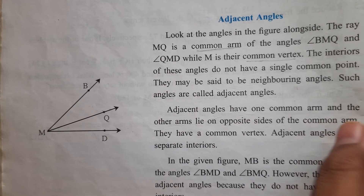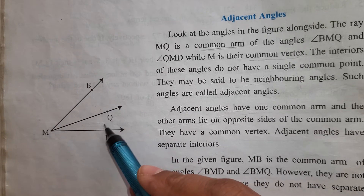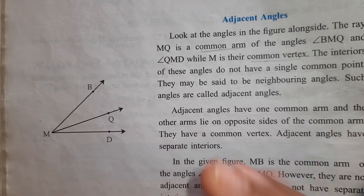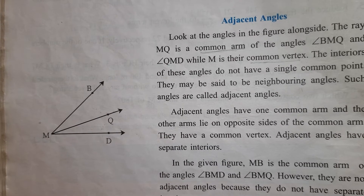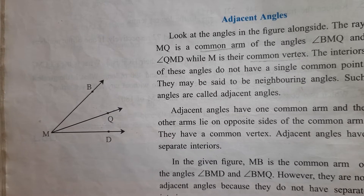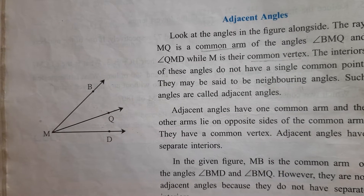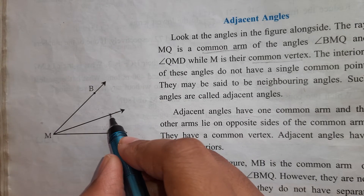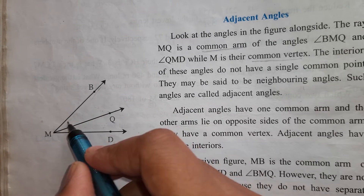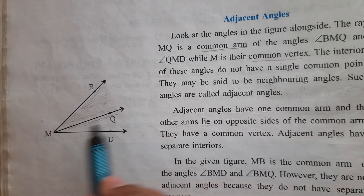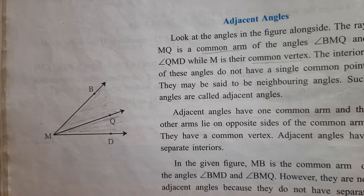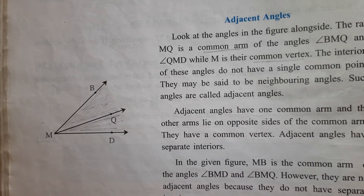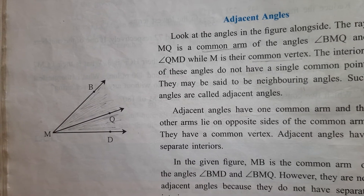The third very important thing is that the interior of both angles are separate — they are different. M, Q is the common arm; the interior of this angle is one portion and the interior of the other angle is a different portion. When two angles have a common arm, a common vertex and separate interiors, such two angles are called adjacent angles.